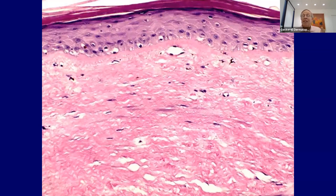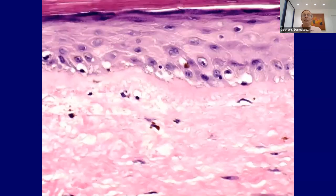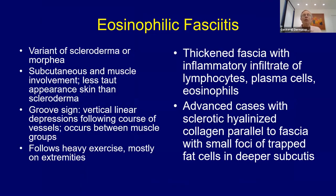Chronic scleroderma-like PCT can also look like this. This is a reaction pattern where you have to have clinical information, or you just call it scleroderma or sclerosing dermatitis. Eosinophilic fasciitis — in order to make this diagnosis, you really need to take a deep incisional biopsy and get into the fascia. There may be some sclerosis of the dermis, but if you just do a deep punch biopsy you don't get into the fascia. It may look like scleroderma, but it can actually have deeper involvement, all the way down into the muscle in some cases.